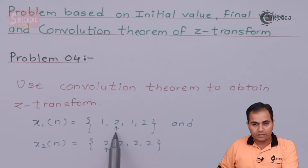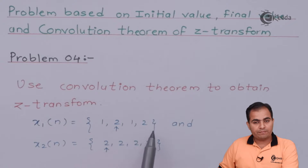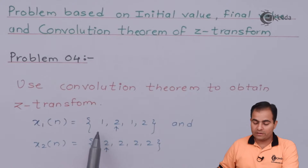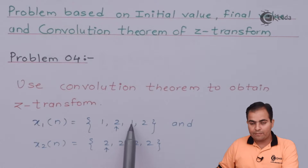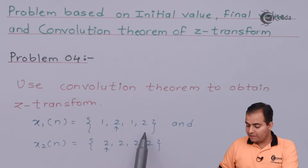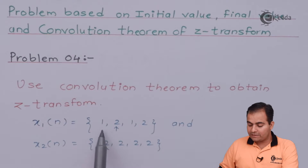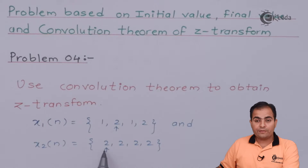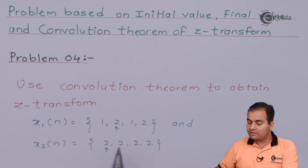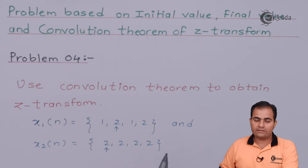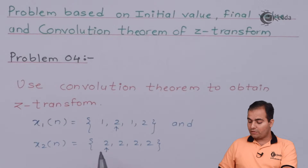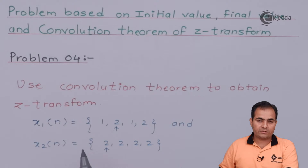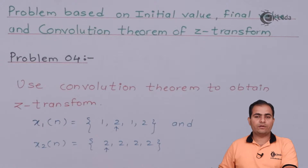The origin is placed at the second sample. On the right-hand side we have two samples and on the left-hand side we have one sample. At instant 1 we have amplitude 1, at instant 2 we have amplitude 2, and at instant minus 1 we have amplitude 1. Since the leftmost value is marked as the origin, all other samples are available on the right-hand side at positive instants. First we will apply Z-transform to both parts and then move to the solution.